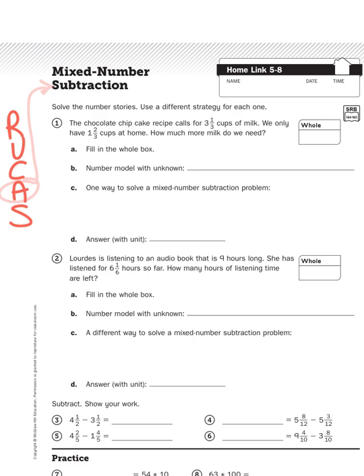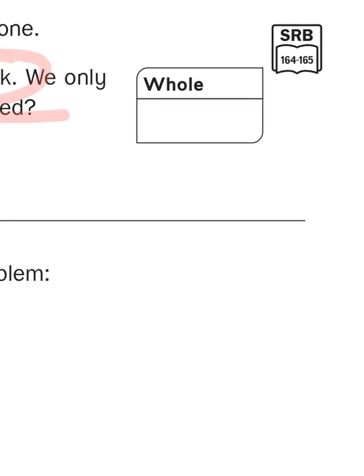Let's reread that problem. The chocolate chip cake recipe calls for three and a third cups of milk. We only have one and two thirds cup at home. How much more milk do we need? The first question is, what is my whole, W-H-O-L-E, or in other words, what's my unit? What am I counting when I'm subtracting? We are counting cups of milk.